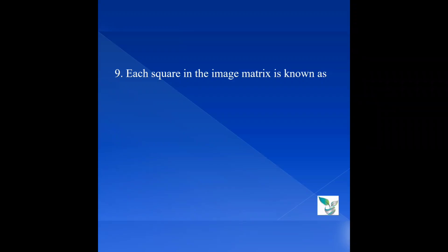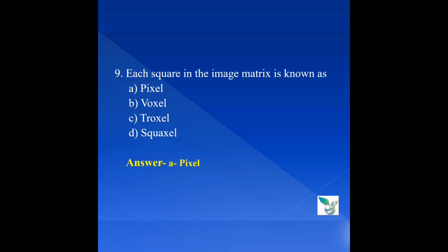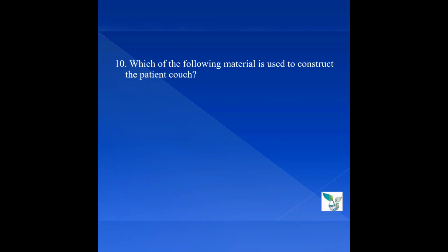Question 9: Each square in an image matrix is known as — Option A: pixel, Option B: voxel, Option C: proxel, Option D: square cell. The answer is Option A: pixel. A CT image is composed of a square image matrix that ranges in size from 256×256 to 1024×1024 picture elements, or pixels.